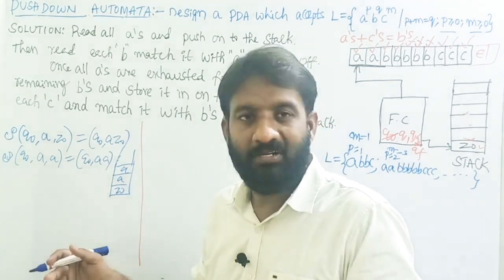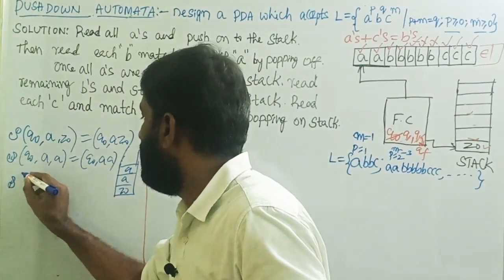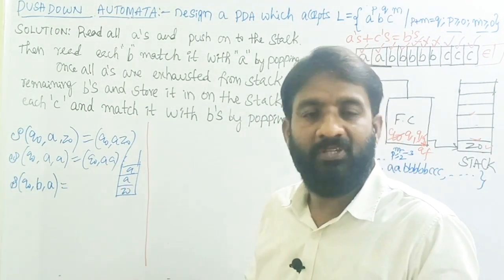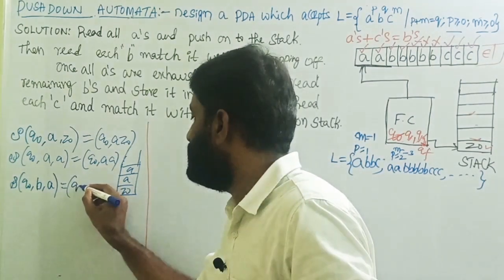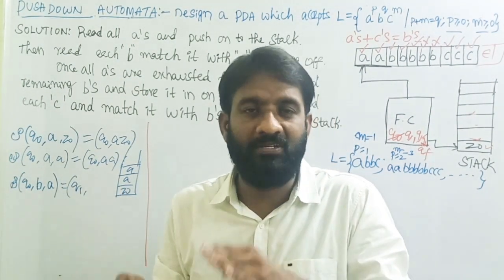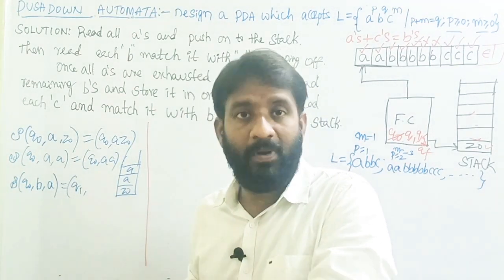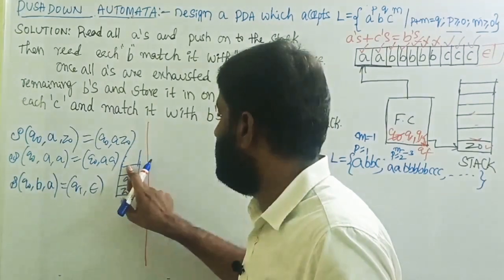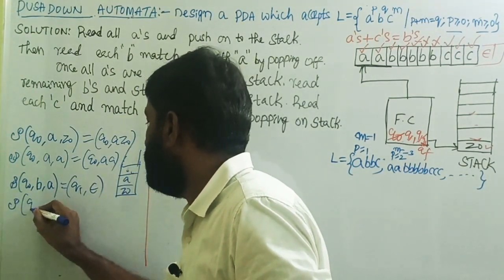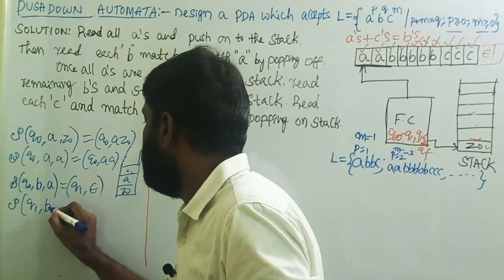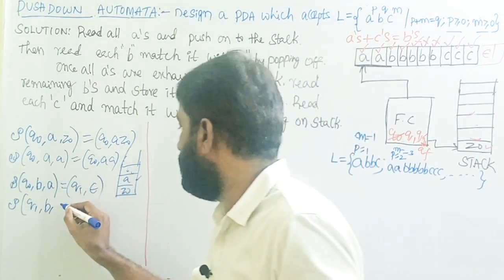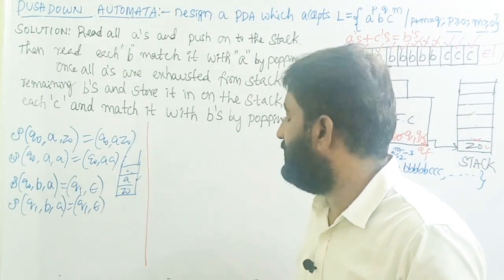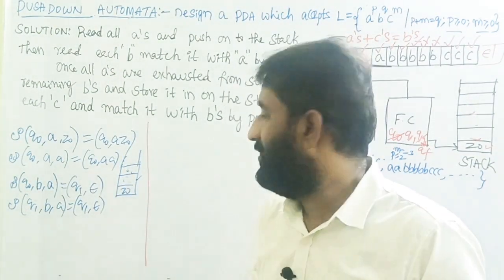When A's are exhausted and B's start, the transition of Q0 with input symbol B and top of stack A — match B with A by doing the pop operation and change to new state Q1. I'm changing to Q1 to show the configuration difference in the pushdown automaton, because now I am reading B's and doing the pop operation. So: Q0, B, A equals Q1, Epsilon — remove A. Transition of Q1 with B and top of stack A equals Q1, Epsilon — do the pop operation and remove A.